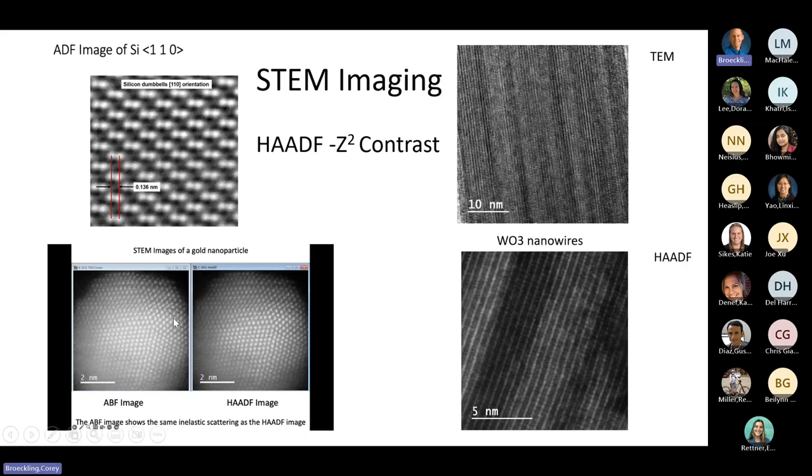Here's STEM bright field image and high angle angular dark field image of gold nanoparticle showing the individual columns of gold. You're not seeing individual atoms, but you're seeing columns. The scattering, the stronger the scattering, the deeper or the longer the column. STEM imaging is Z squared, atomic number squared, approximately. So as you increase Z, you really do get difference in scattering.